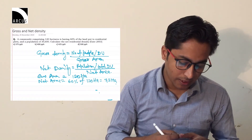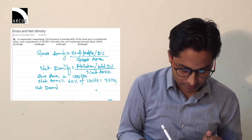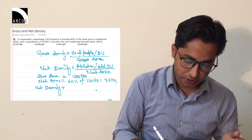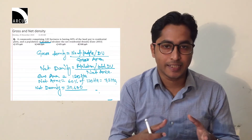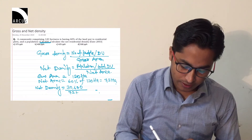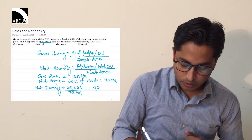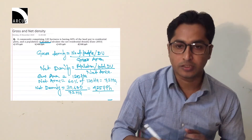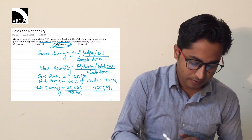Now we calculate the net residential density. Net density equals population divided by net area — that is 30,600 divided by 72 hectares, which gives 425 persons per hectare (PPH). So the answer is 425 PPH, which is option C. This should make it very clear what gross and net area are, and how to calculate gross density and net density.